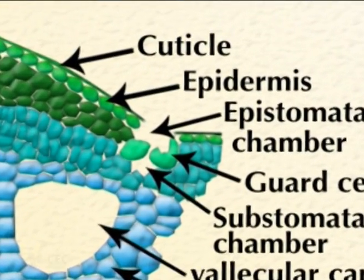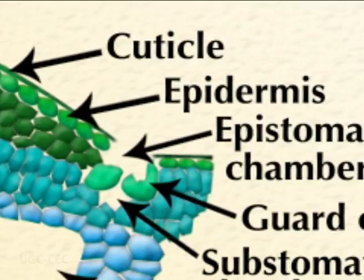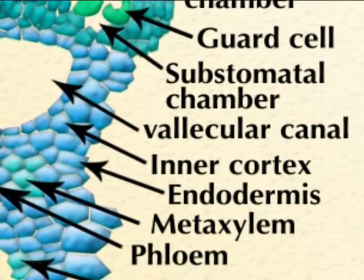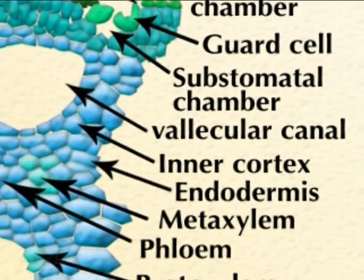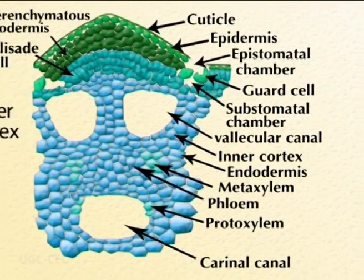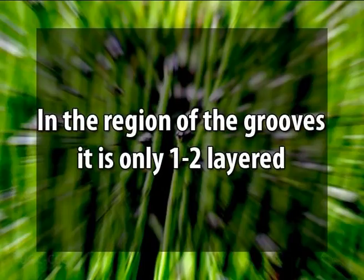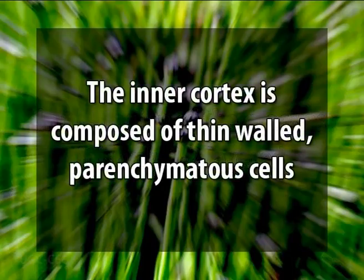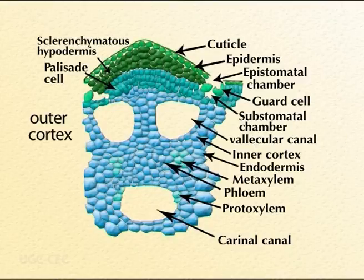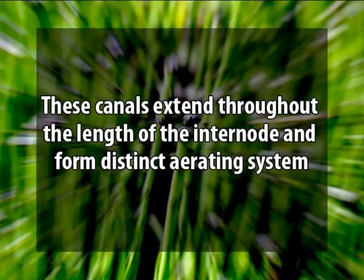The epidermis is interrupted by stomata, which are usually confined to the grooves in case of Equisetum. The cortex is differentiated into an outer and an inner region. The outer cortex consists of sclerenchyma and chlorenchyma cells. The sclerenchyma lies just below the epidermis and provides mechanical strength to the shoot; it is mainly many-layered below the ridge, but in the region of grooves it is only one to two layered. The inner cortex is composed of thin-walled parenchyma cells. It has large schizolysogenous canals, known as vallecular canals, below the ridges. These canals extend throughout the length of the internode and form a distinct aerating system.